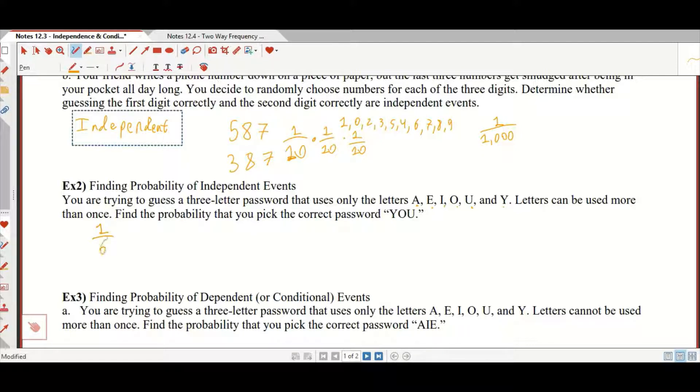There's a 1 in 6 chance that you pick the correct first letter. After you've picked that, there's a 1 in 6 chance that you pick the second letter. And then there's a 1 in 6 chance that you pick the third letter. 1 over 6 times 1 over 6 times 1 over 6 is like the fundamental counting principle, but with probability. So since these are independent events, because you could pick YYY,